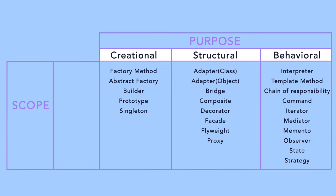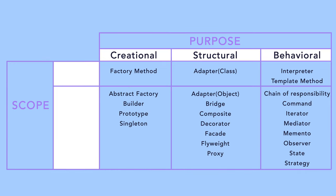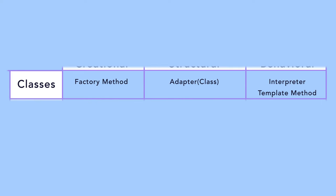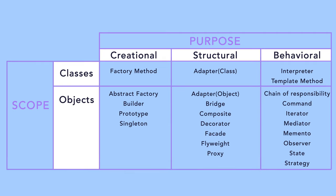There is also a way to categorize these patterns on the basis of classes and objects. There are some patterns applicable only on objects and some applicable only on classes. Mostly all the patterns work on objects — there are only four or five patterns, as you can see in the list, that are applied on classes. The rest of the patterns are actually applied on objects.